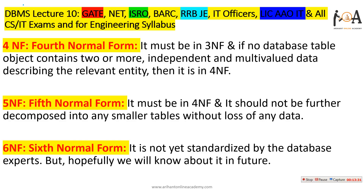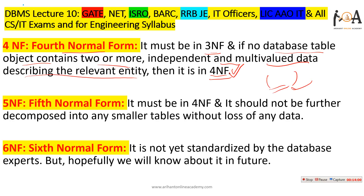For Fourth Normal Form (4NF): the table must be in 3NF, and no database table or object should contain two or more independent multi-valued data describing the relevant entity. If the table is in 3NF and contains no two or more independent multi-valued attributes, then it is in 4NF.